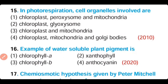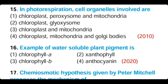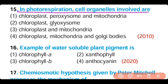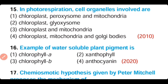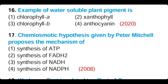Question number 15. In photorespiration, the cell organelles involved are chloroplast, peroxisome, and mitochondria. The correct answer is option 1: chloroplast, peroxisome, and mitochondria are all involved in photorespiration.